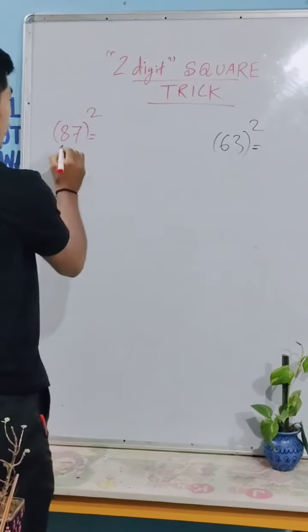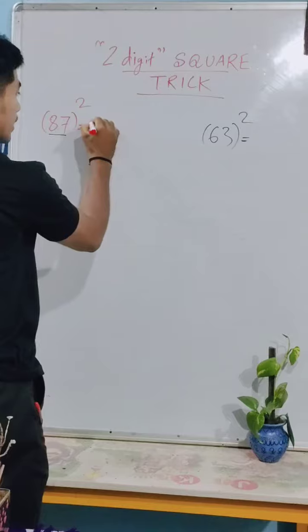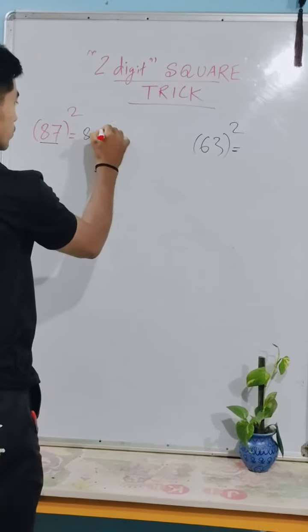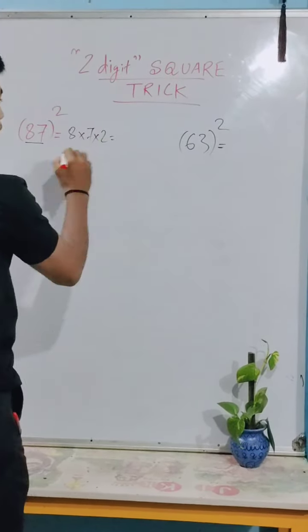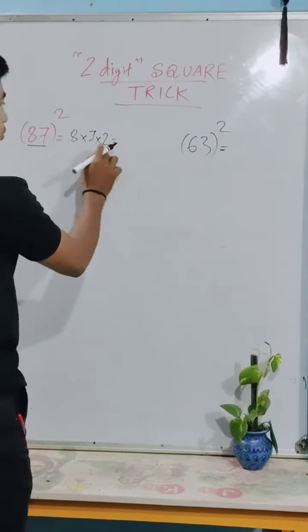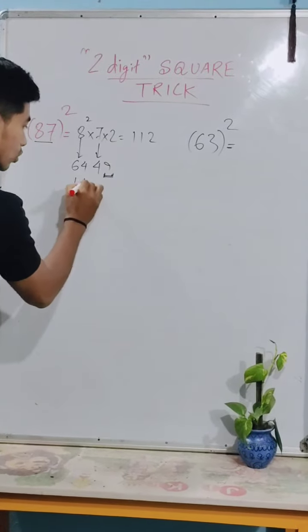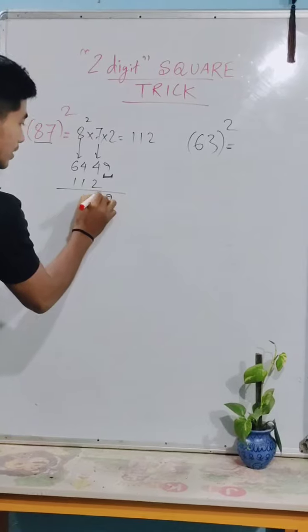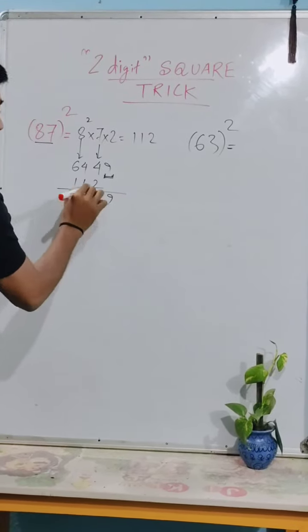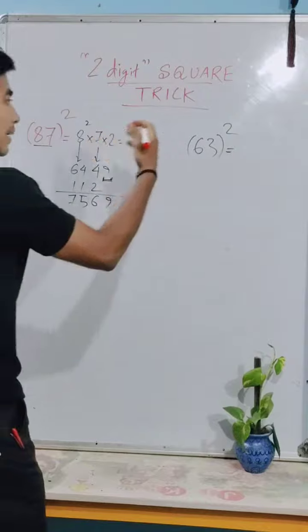How do we calculate 87 squared? We have 8 and 7. Eight squared is 64, seven squared is 49. We combine 64 and 49, placing them in the correct positions to get the answer. So 7569 is the right answer.